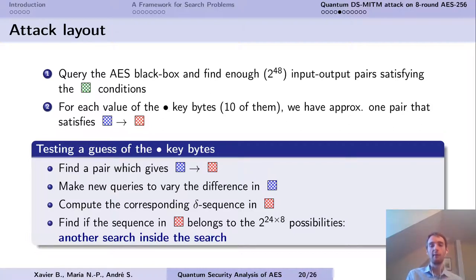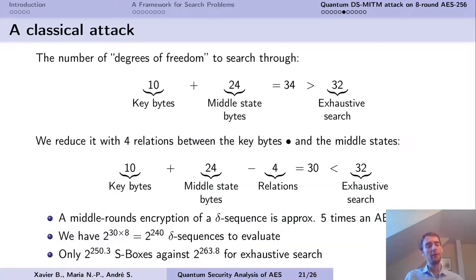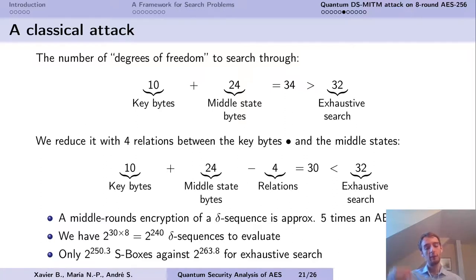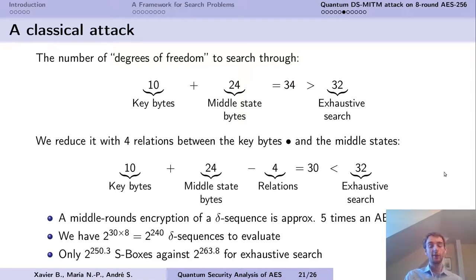Classically we would tabulate the distinguisher and check membership in a big table, but that table is too large, so instead we have to make another search inside the search. Do we have an attack? We have 10 key bytes to search through and 24 bytes to guess in the middle state — naively 34 bytes, which is bigger than exhaustive search of the key, so this is not an attack yet. But we can do better because there are relations between the key bytes guessed and the middle states: we found four relations coming from the key schedule of AES-256, which means we now have only 30 byte degrees of freedom to search through — smaller than exhaustive search — so we may have an attack.